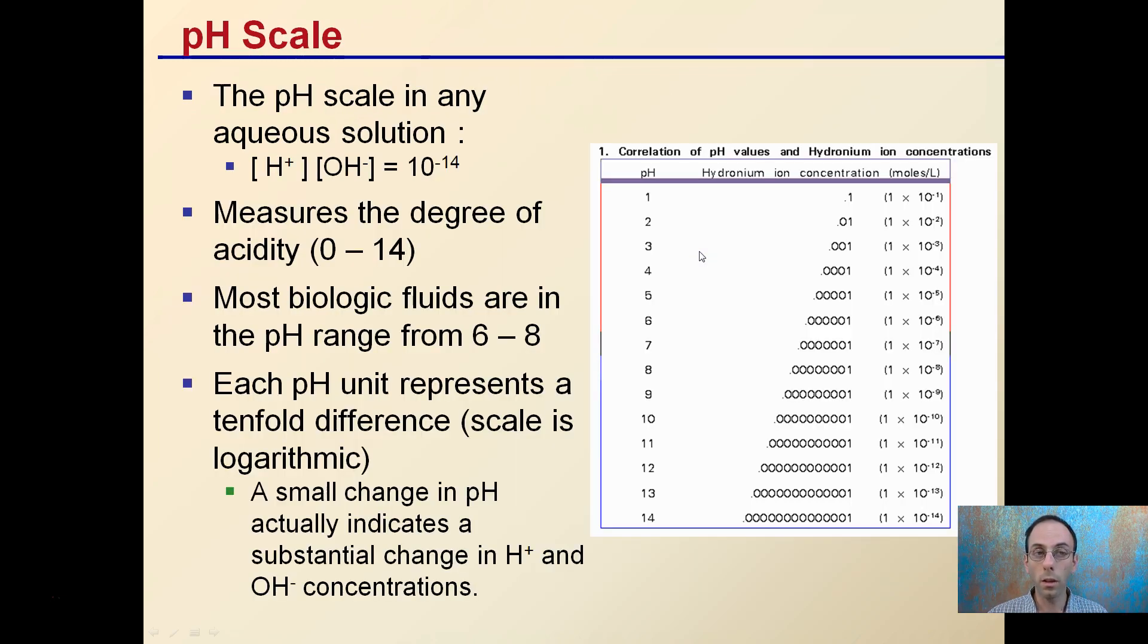The pH scale of that aqueous solution measures the hydrogen and hydroxide ions, 0 to 14 degrees, and most biological fluids are in the pH range of 6 to 8. Each pH unit represents a tenfold difference, and that scale is logarithmic. This means a small change in pH actually indicates a substantial change in hydrogen and hydroxide ion concentrations. It's a tenfold increase. We're moving that decimal place every pH.